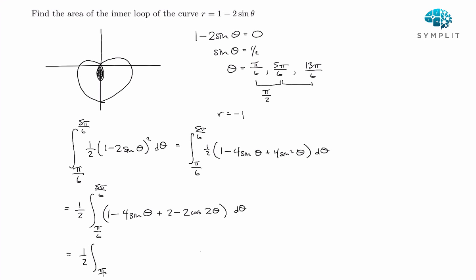And let's go ahead and just multiply it one more time before integrating. We've got 1 plus 2, that's 3. So 3 minus 4 sine theta minus 2 cosine of 2 theta.